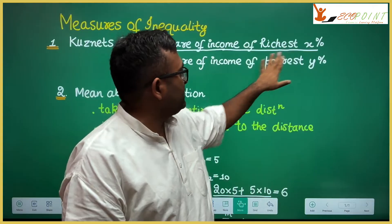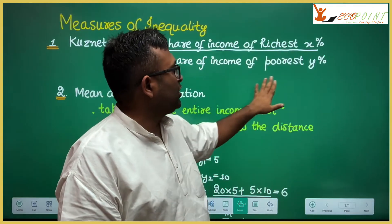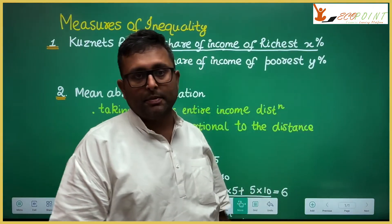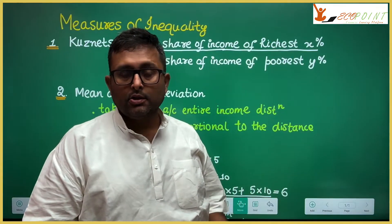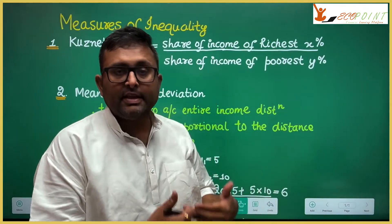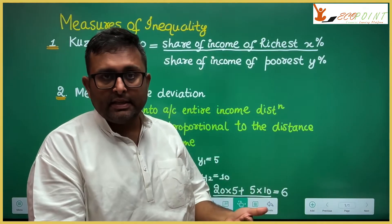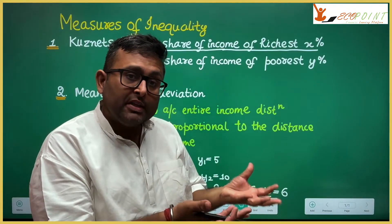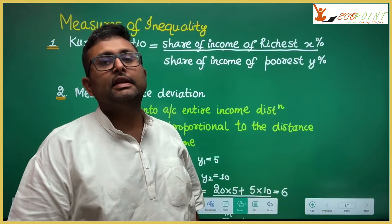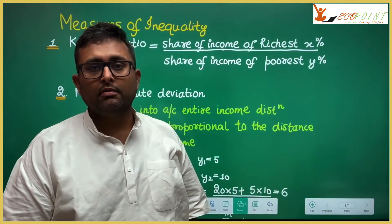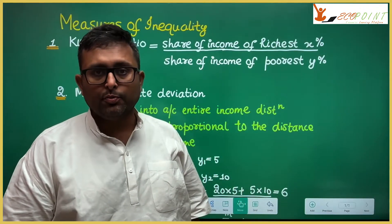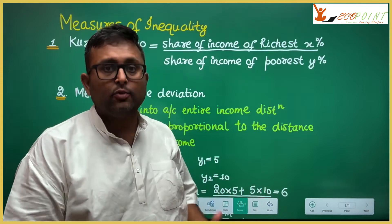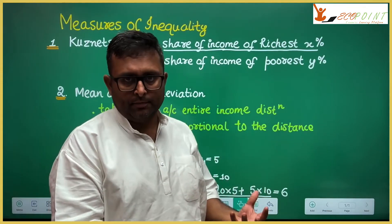It is the share of the richest x percent divided by the share of the poorest y percent. If this ratio is increasing, it means the share of richer people is increasing in the income distribution, and hence inequality is growing.